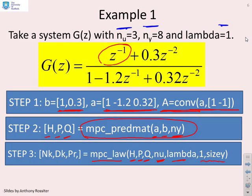And these last two parameters are less critical. But the size Y is telling you whether this is a multivariable system or not. And then you've got your control law parameters come out at the end.